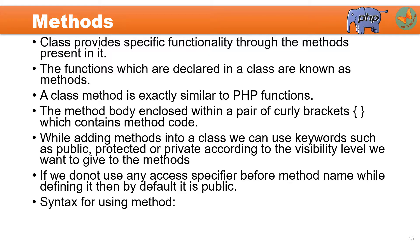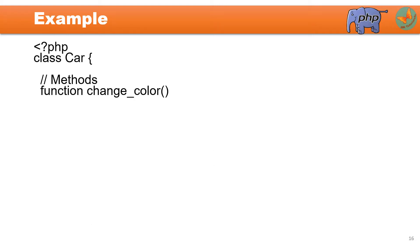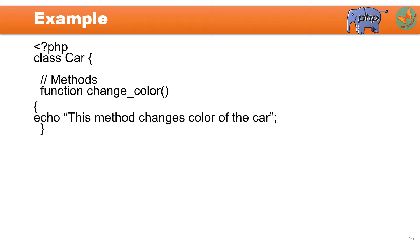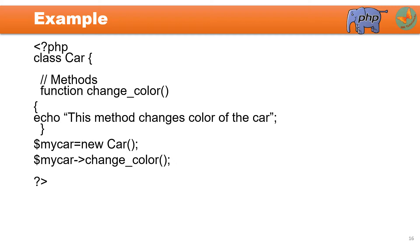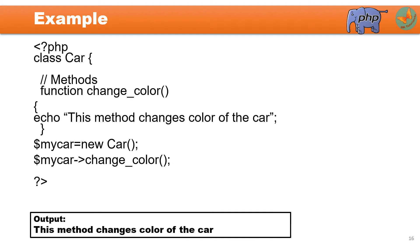Let us see the syntax for calling a method: dollar object name, arrow operator, method name. Let us take one example. Within the car class I will declare a method called change_color. So I write function change_color and within the curly braces I have just written one echo statement: 'this method changes color of the car'. Now I will create an object variable of class car and call this method: dollar my_car arrow operator change_color. Since it is calling the method change_color and within that method an echo statement is there, our output will be: this method changes color of the car.